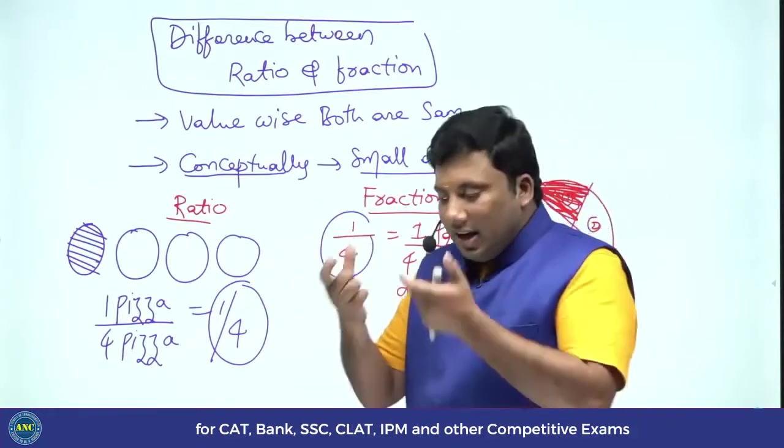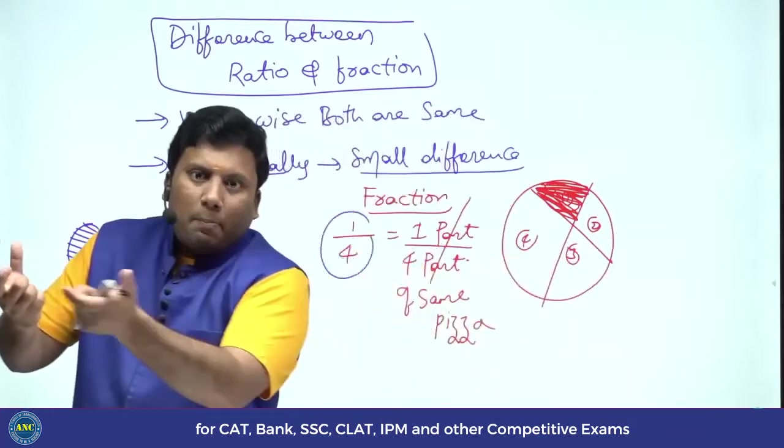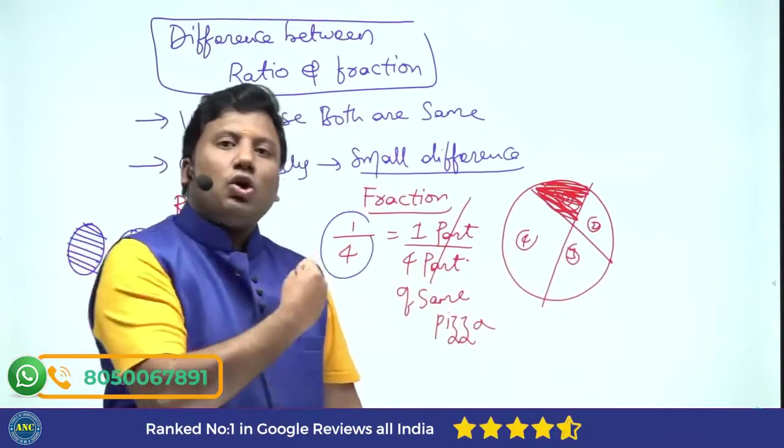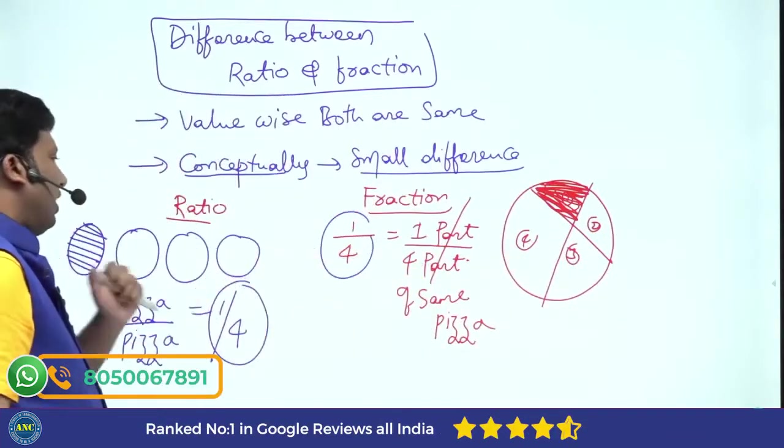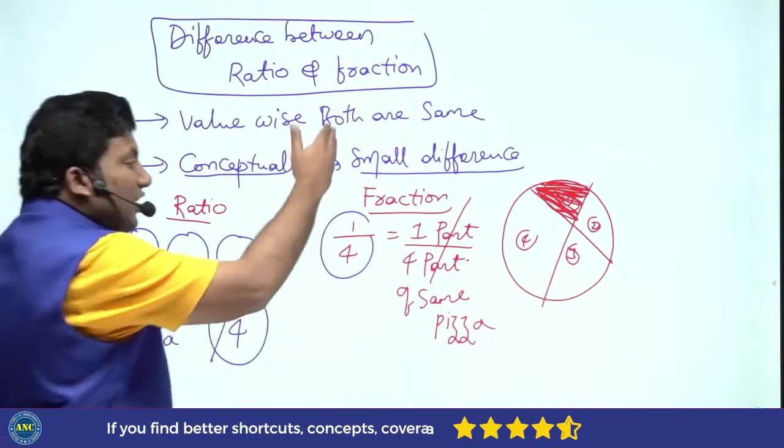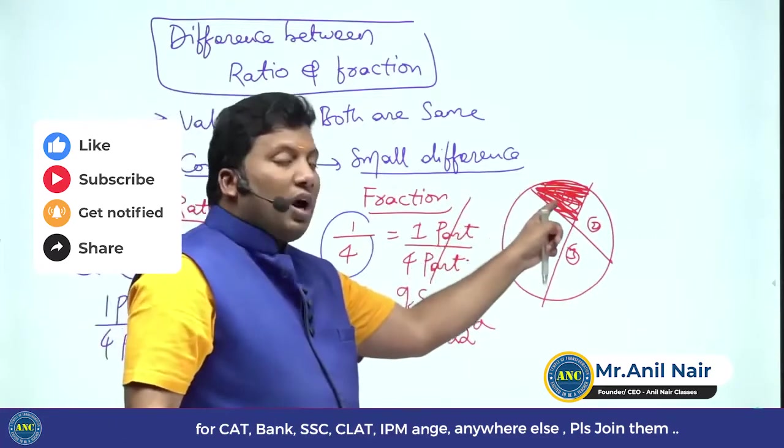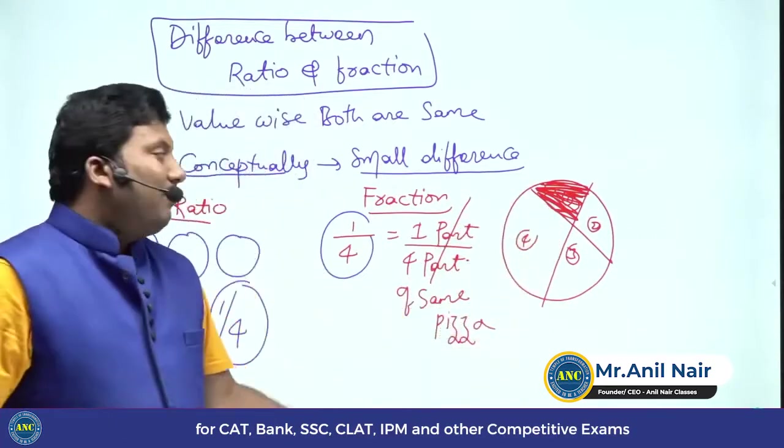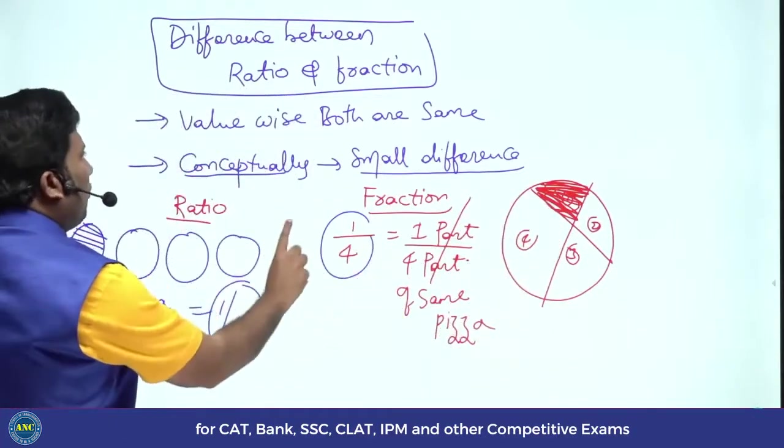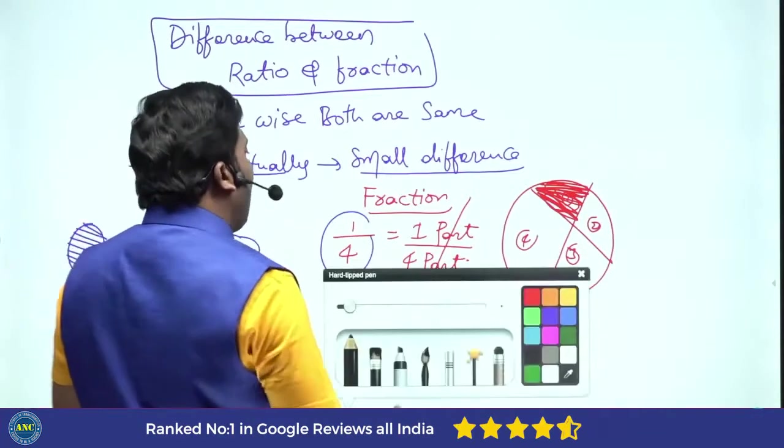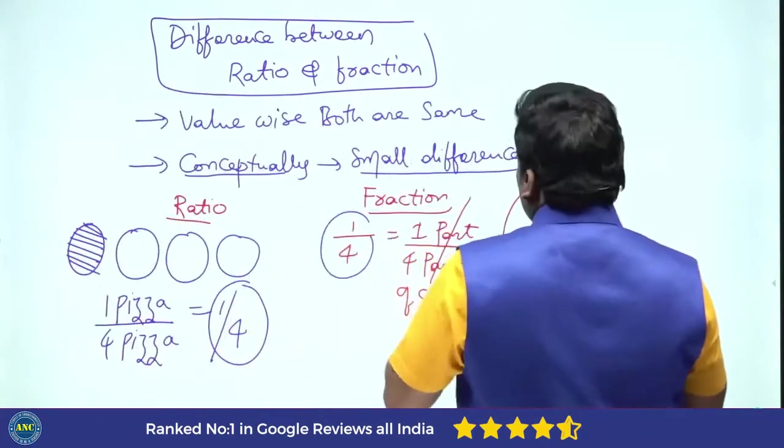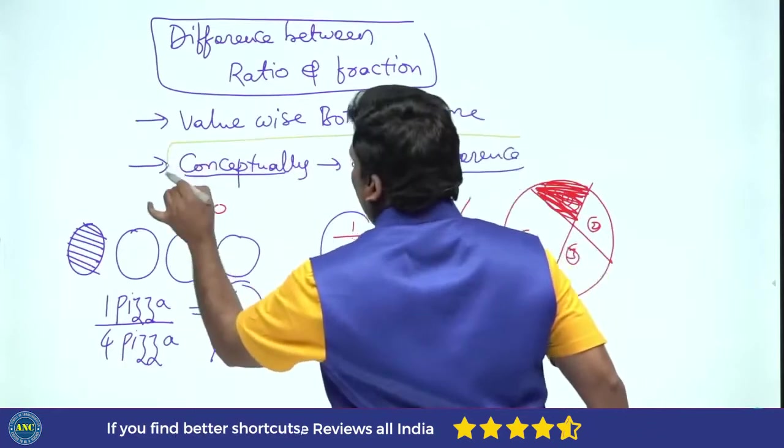Ratio. I hope it is clear. Same pizzas four you kept. You took one pizza out of four pizzas, it is ratio. Within the same pizza, you divided it into multiple parts. I want one part out of four parts, that is a fraction. Value wise both are same. But conceptually, there is a small difference.